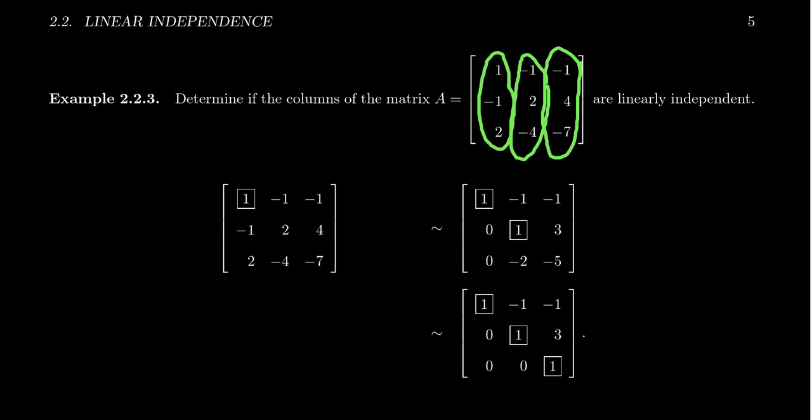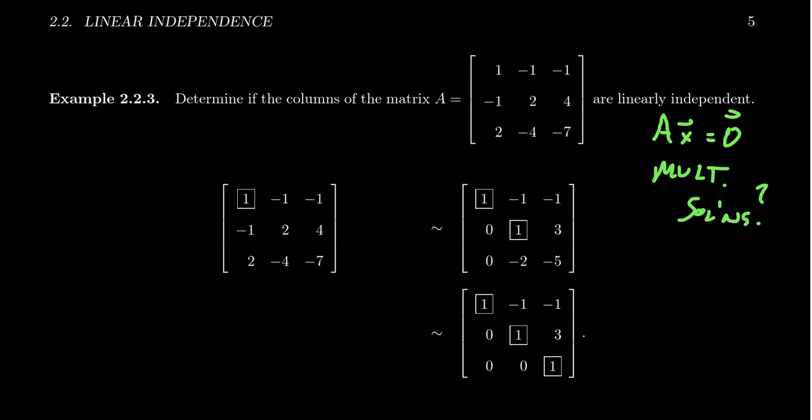Is there some way to non-trivially combine the vectors to get the zero vector? Or can that only be done using the coefficient 0, 0, 0? Well, so we're asking, are the columns of this matrix linearly independent? To determine whether it's linearly independent or not, we have to solve the homogeneous system AX equals 0 and find out, are there multiple solutions? Are there non-trivial solutions to it?